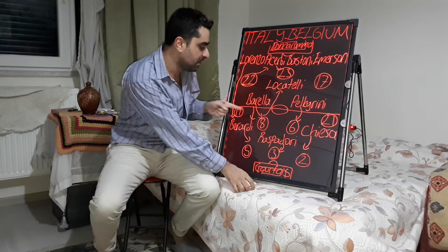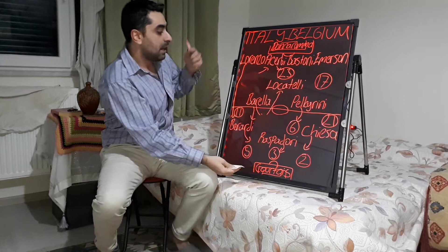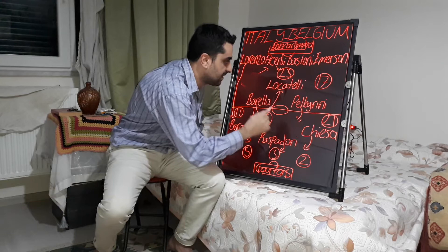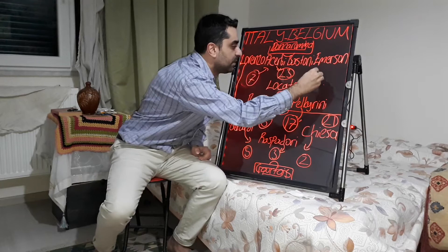Tielemans and Saelemaekers came off. Ketalaere and De Bruyne replaced them. After this substitution, Axel Witsel played as a number six, Vanaken played in the centre of midfield with Witsel, De Bruyne played on the left forward, and Ketalaere played on the right forward.